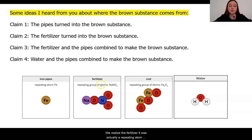We realized the fertilizer was actually a repeating atom group of a molecule that contains some different types of atoms. And we realized that the rust, also known as iron oxide, again, was a repeating molecule, so an atom group of these different atoms.